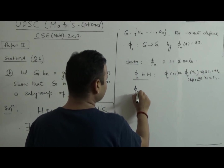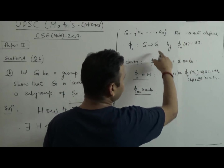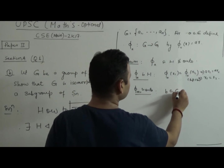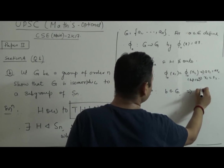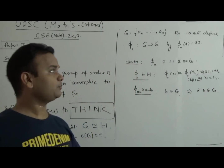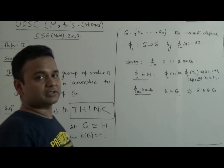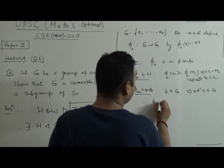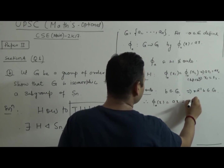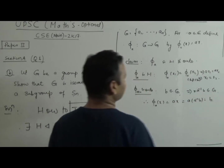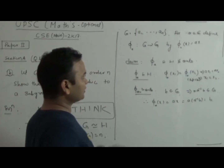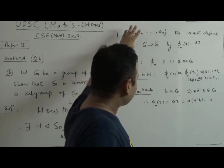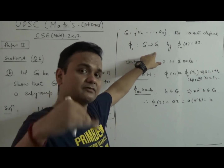To prove φ_a is onto: pick any element b from G. Then a⁻¹b also belongs to G because G is a group and is closed with respect to the operation. Define x = a⁻¹b. Then φ_a(x) = ax = a(a⁻¹b) = b. So φ_a is onto. Hence the claim is proved — φ_a is one-one and onto, meaning φ_a is a bijection from G to G.